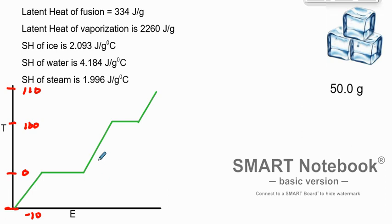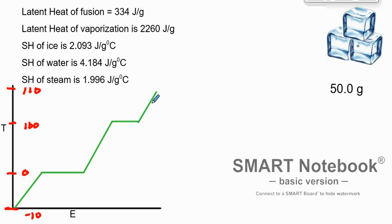Once all the ice is melted, we're going to see an increase in temperature again because we're allowing the molecules to move faster and faster. Then at 100 degrees Celsius we're going to see another transition for boiling, and the temperature won't increase during boiling because we're overcoming the intermolecular forces again as water becomes steam. Then we'll see an increase in temperature as the steam gets heated.